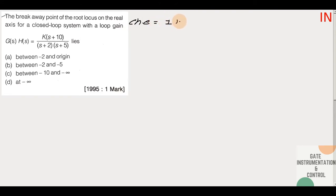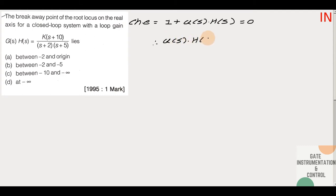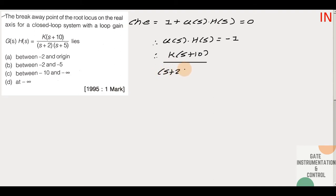1 + G(s)·H(s) = 0, which means G(s)·H(s) is equal to minus 1. The value of G(s)·H(s) available to us is: K multiplied with (s+10), divided by (s+2) multiplied with (s+5), is equal to minus 1.